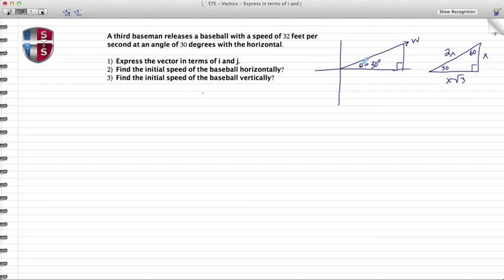From the problem, we know that the magnitude of this vector W is 32. With that, I have two corresponding sides - in this case the hypotenuse. I have 32 equals 2x. Because these two sides correspond, I have an equation I can solve. I can divide both sides by 2, and I see that x comes out to be 16.